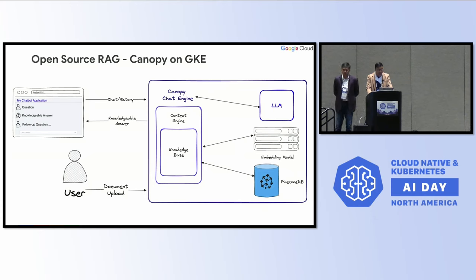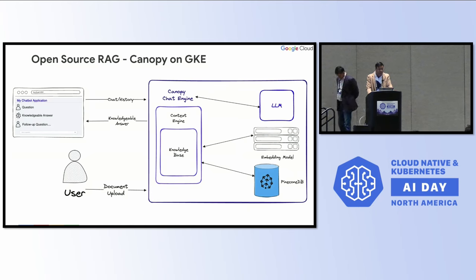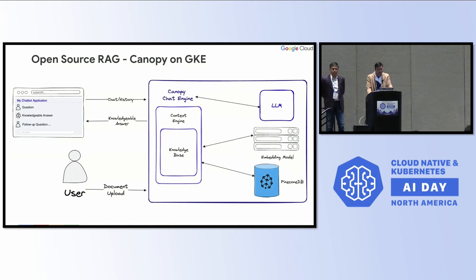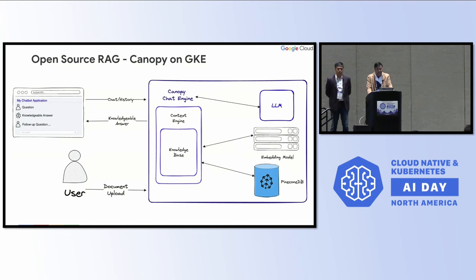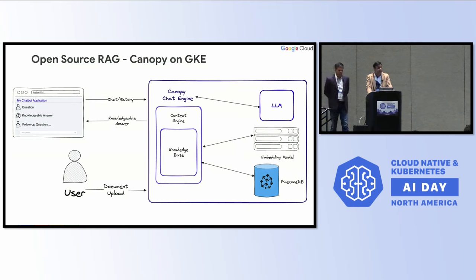The context engine is the retrieval part — whatever data was ingested in the knowledge base through chunking, it finds the most relevant data. The last is the Canopy chat engine, which is the full RAG workflow. It understands your chat history, identifies multiple questions, generates the answer based on the LLM, and then embeds and provides the query results you look for.